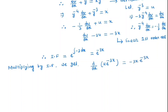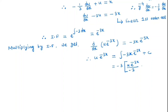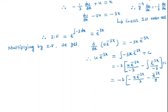Multiplying through by the integrating factor, we have u times e to the power minus 3x. Integrating both sides, we get u·e^(−3x) = integral of −3x·e^(−3x) dx plus C. By integration by parts this gives e^(−3x) times (x/3 + 1/9) plus C, so the general solution is u equals e^(3x) times (−x/3 − 1/9) plus C·e^(3x).